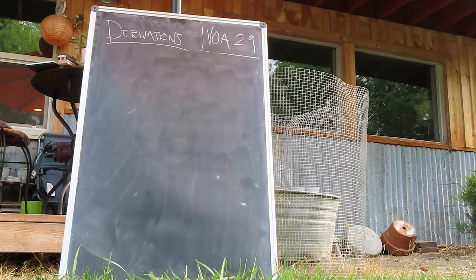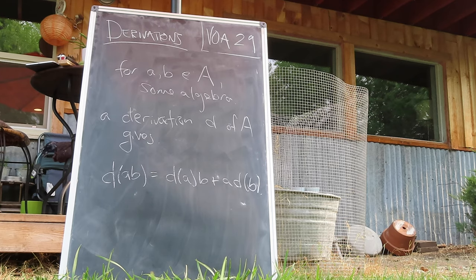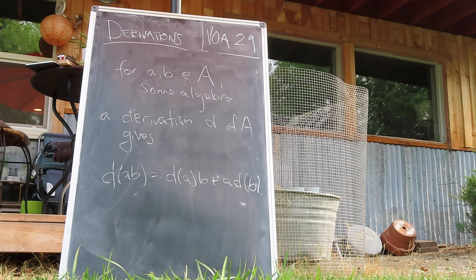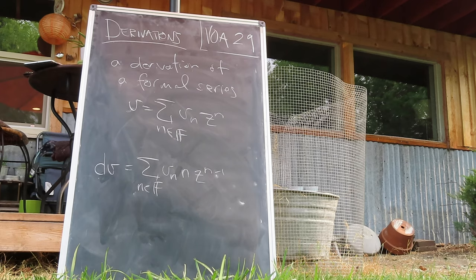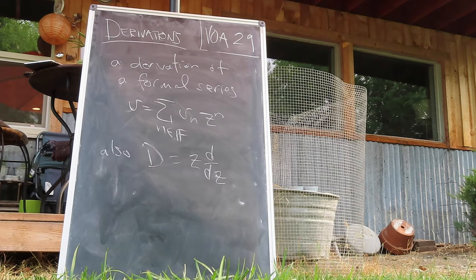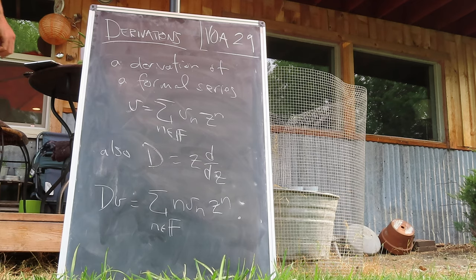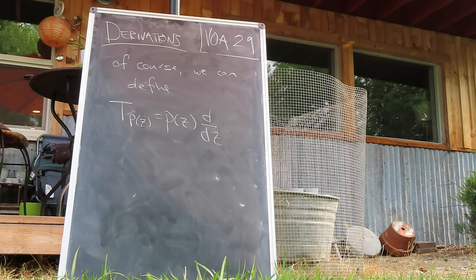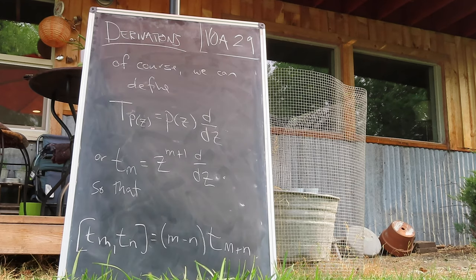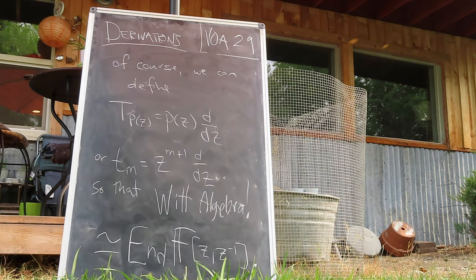On to the topic du jour: derivations. If A is some algebra with elements a and b, a derivation D acting on the product ab is D(a)·b + a·D(b). It's a map, sure, but not an isomorphism. A derivation of formal sums has a similar behavior but perhaps one that's a little more familiar from calculus. We also defined the operator D, which acts like you might expect and is basically the degree derivation we've been playing with of late. We can also define a more general derivation based on a polynomial p(z) or in particular the operators t_m, which form a familiar Lie algebra — namely the Witt algebra, i.e., the endomorphisms of Laurent polynomials over F.